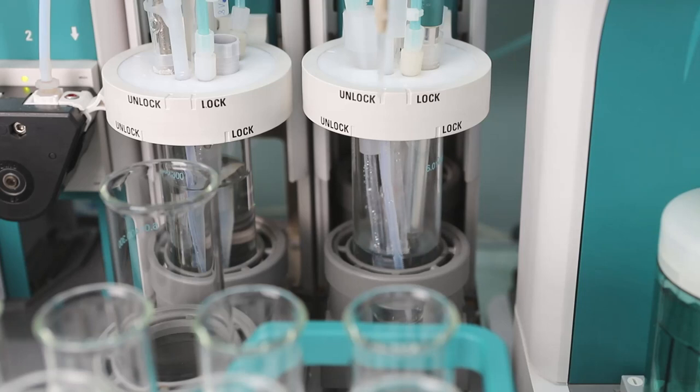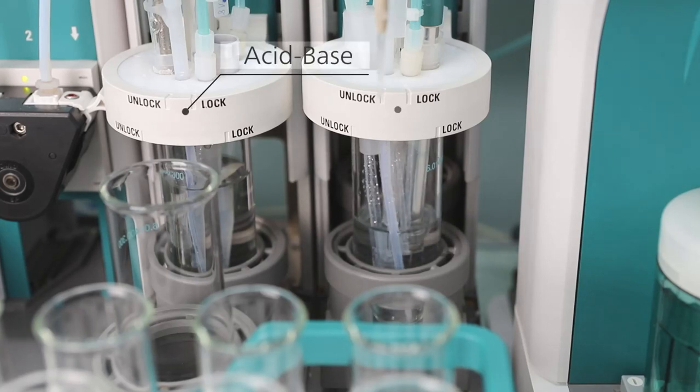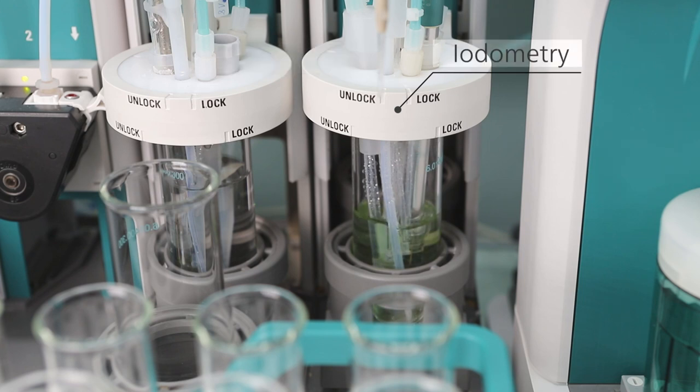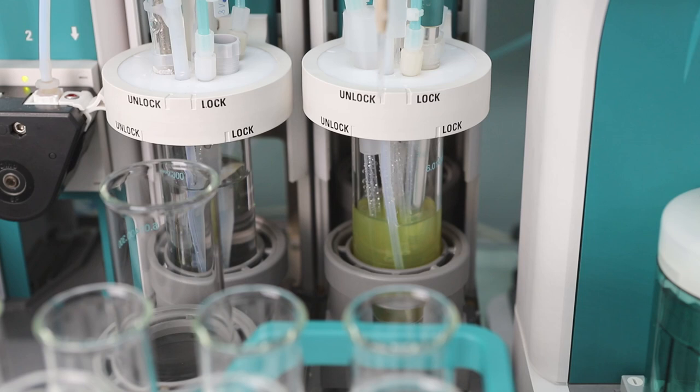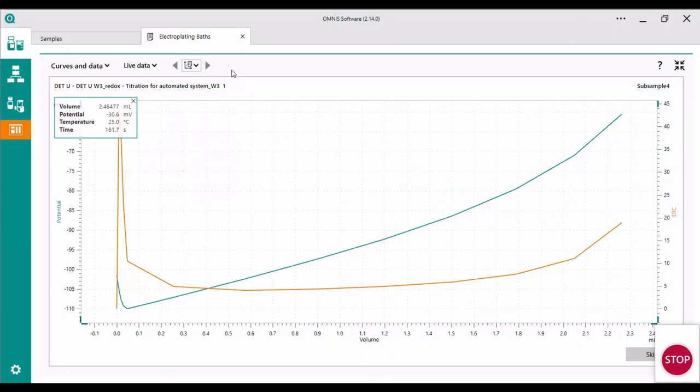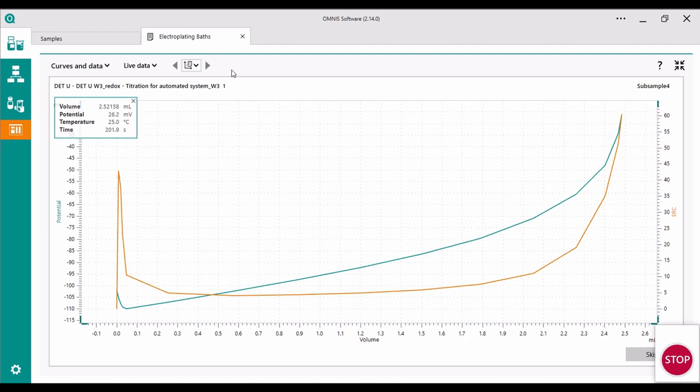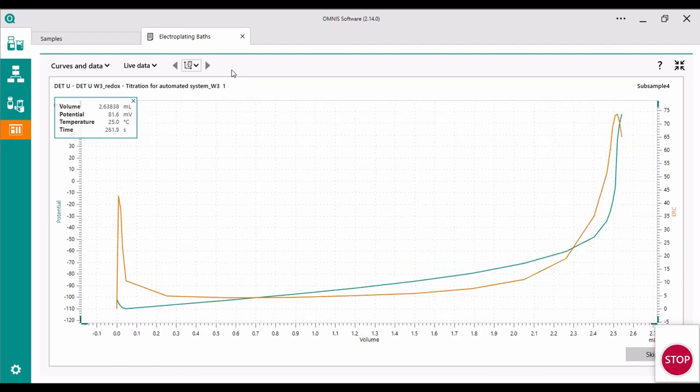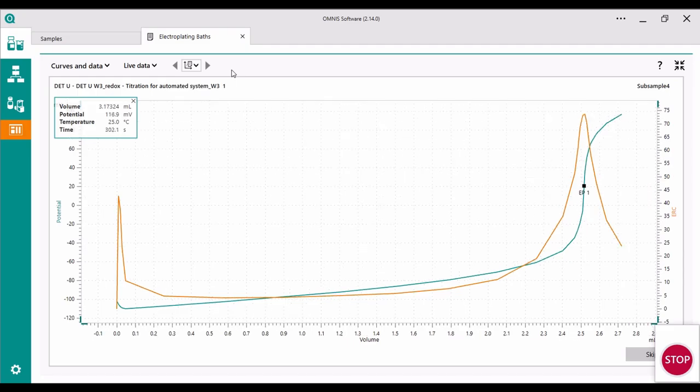The next titration is the iodometric determination of the copper concentration in an acidic copper bath with a platinum titrode. Prior to the determination, two auxiliary solutions are dosed automatically. A mixture of potassium iodide and potassium thiocyanate and sulfuric acid. The forming iodine gets titrated with a 0.1 molar sodium thiosulfate solution.